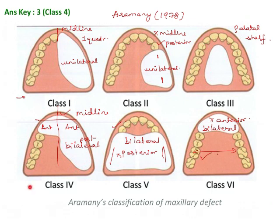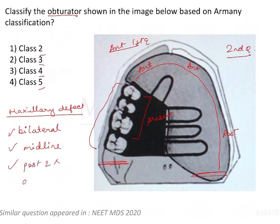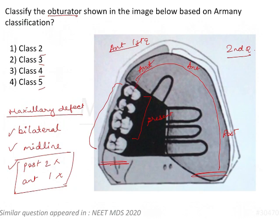In the given question, we have a bilateral defect crossing the midline — all posterior teeth of the second quadrant are missing and anterior teeth of the first quadrant are missing. Coming back to the image, this is Class 4. In the clinical scenario, the obturator includes wires or struts to get retention for the acrylic. So the correct answer is Class 4.